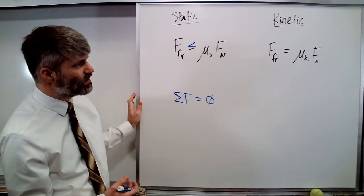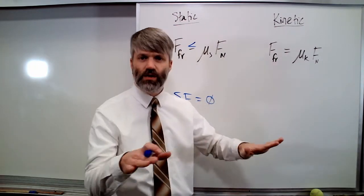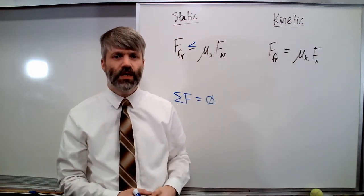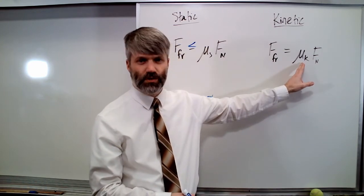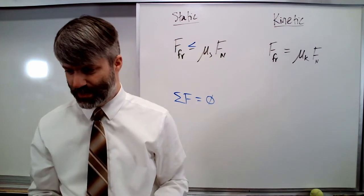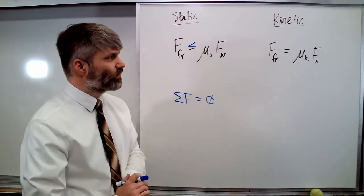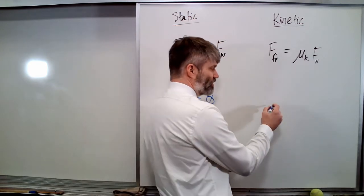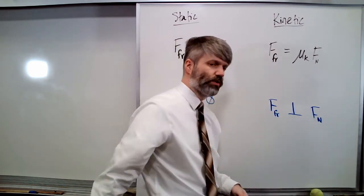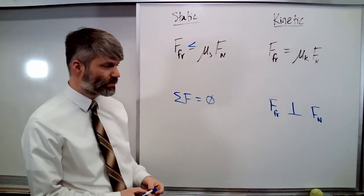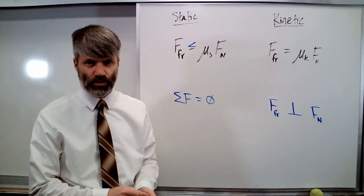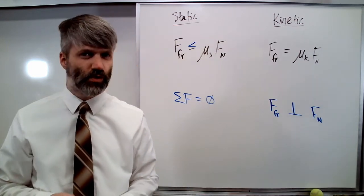We'll notice, too, that friction is not dependent on the area of contact between the two surfaces. The area of contact doesn't enter into our equation at all. It's merely the normal force and the coefficient of friction that tell us the magnitude of the force of friction. It's also important to note that the force of friction is perpendicular to the normal force in any given case, so this is not a vector equation because those two are perpendicular to one another.